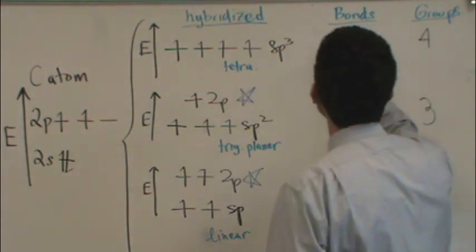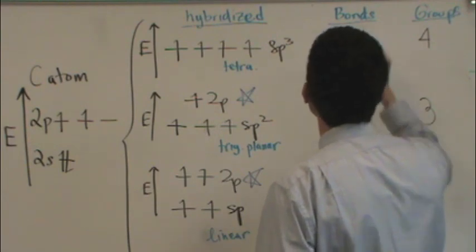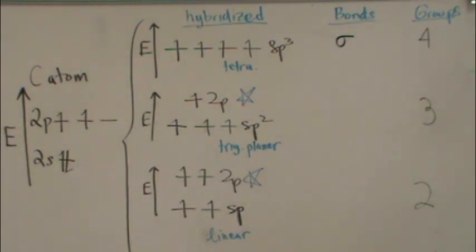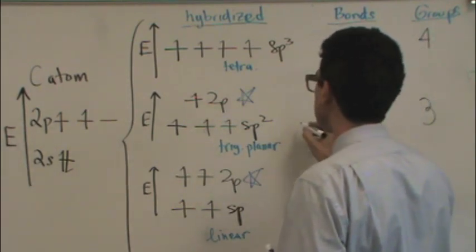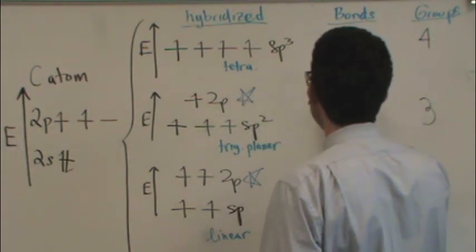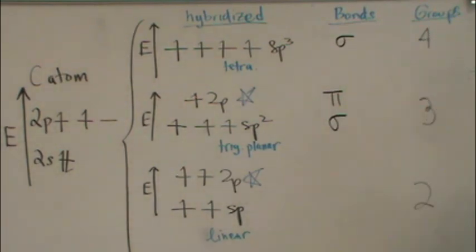The SP3 will result in sigma-type bonds. The SP2 will also result in sigma bonds, but the 2P will result in pi bonds.